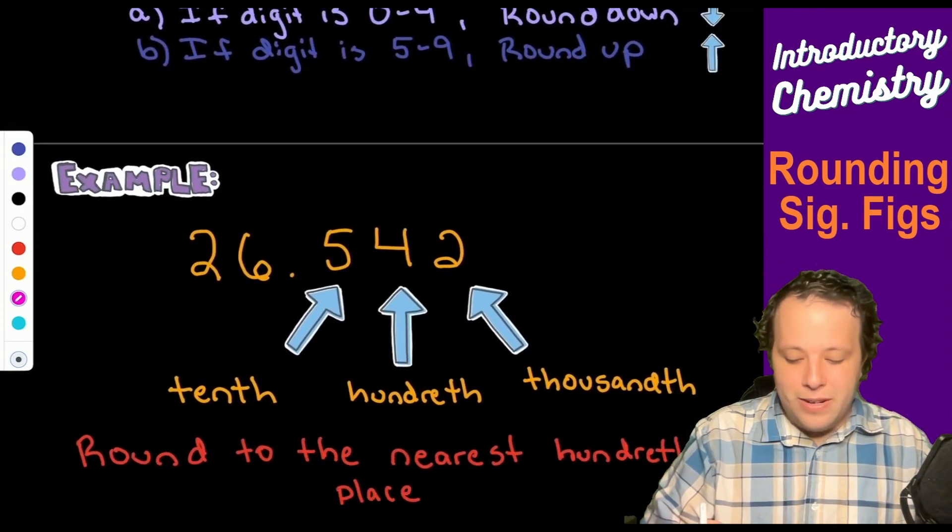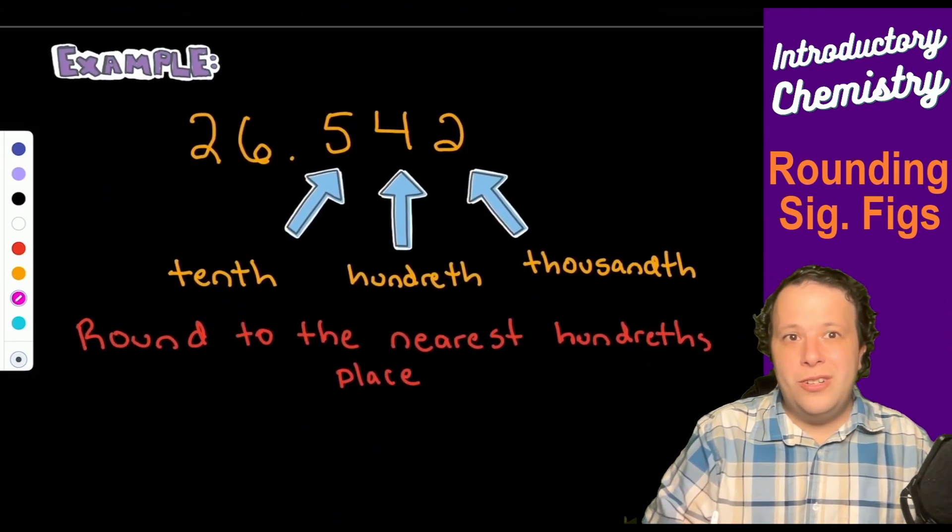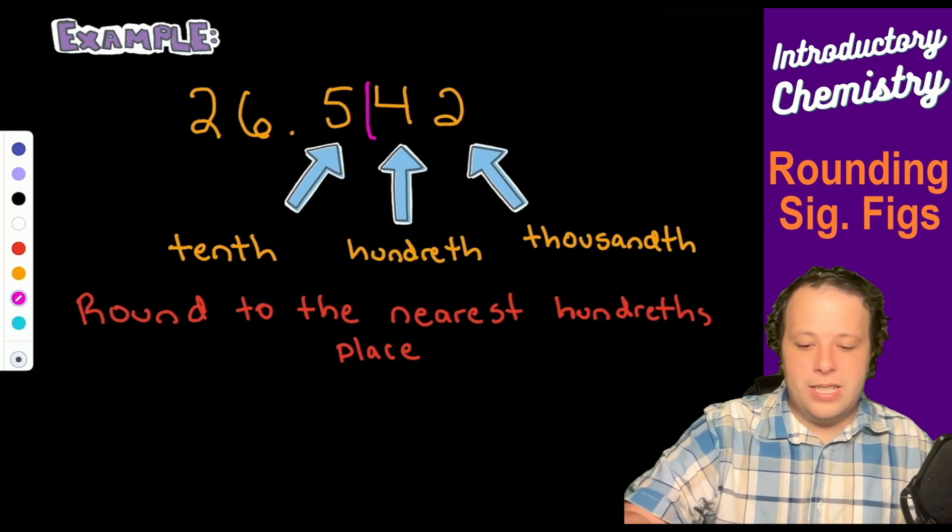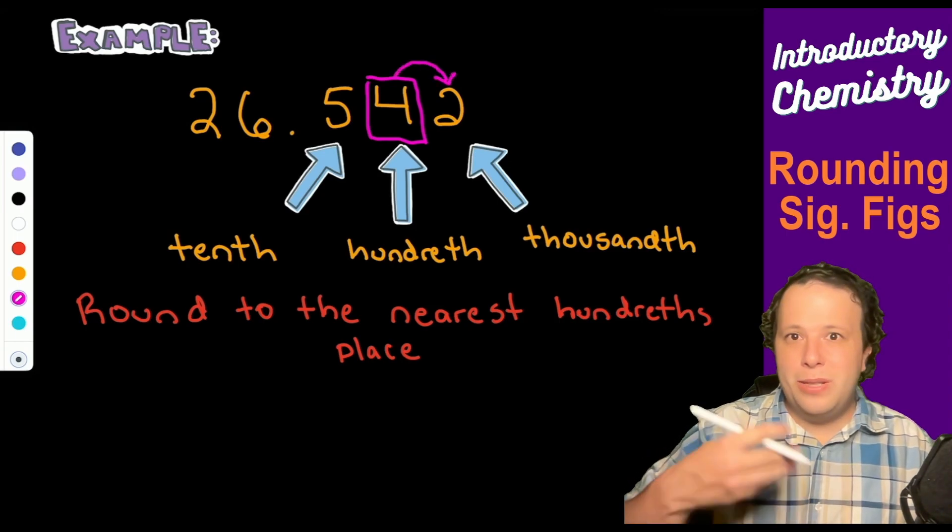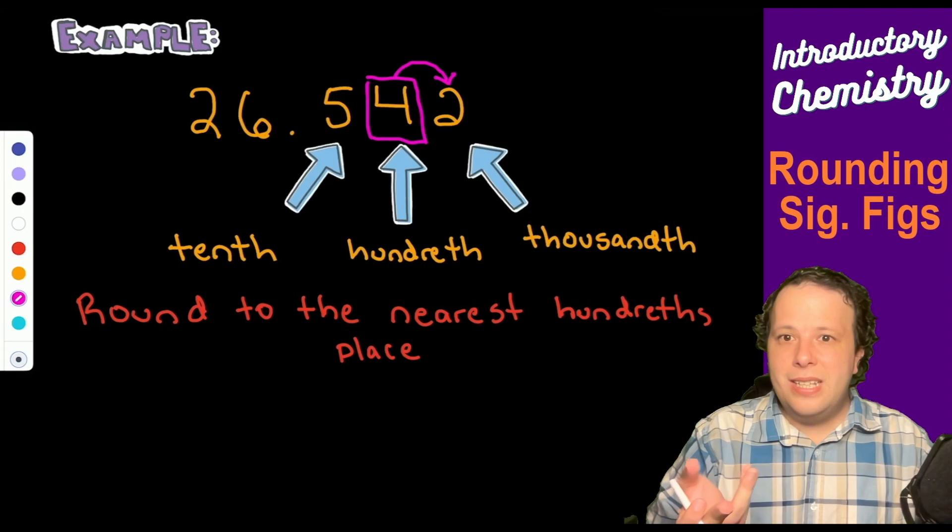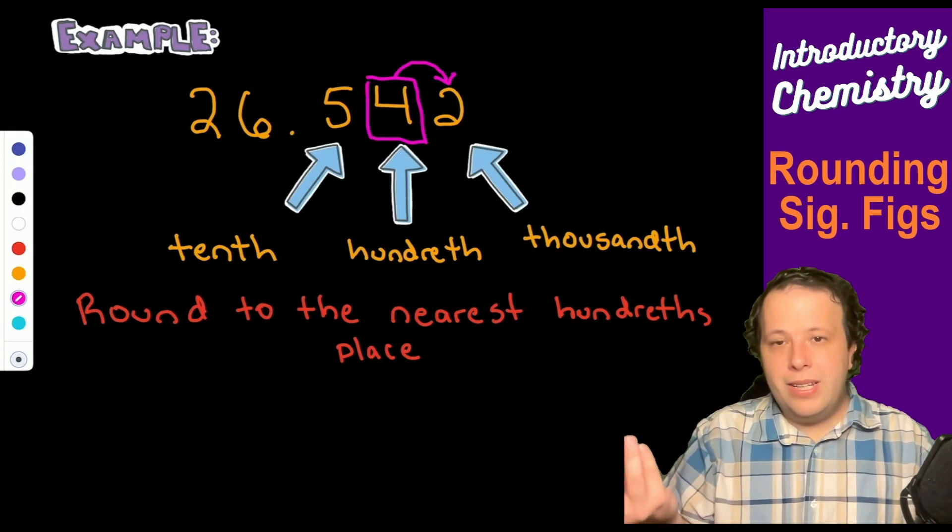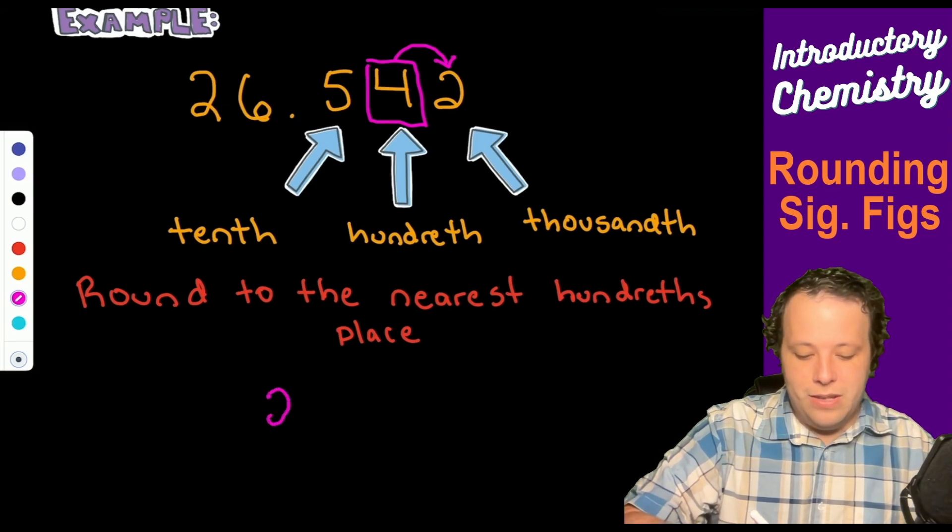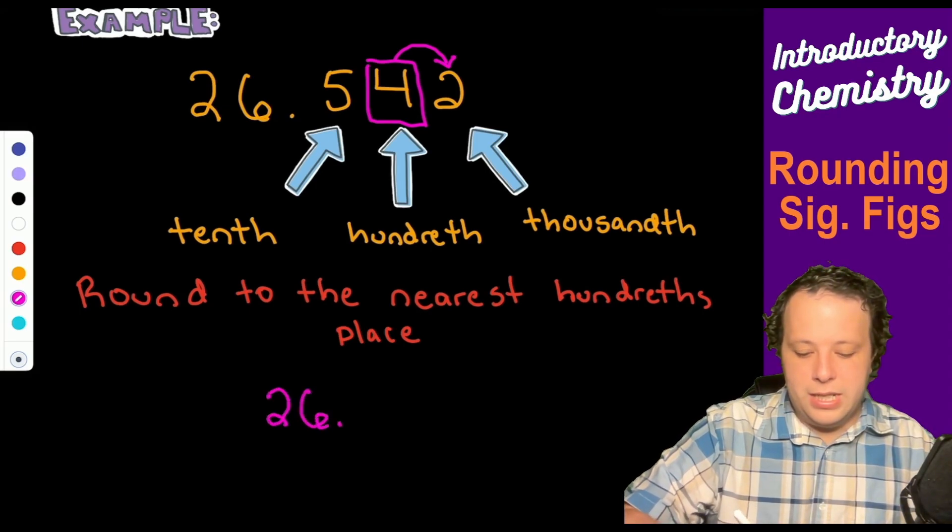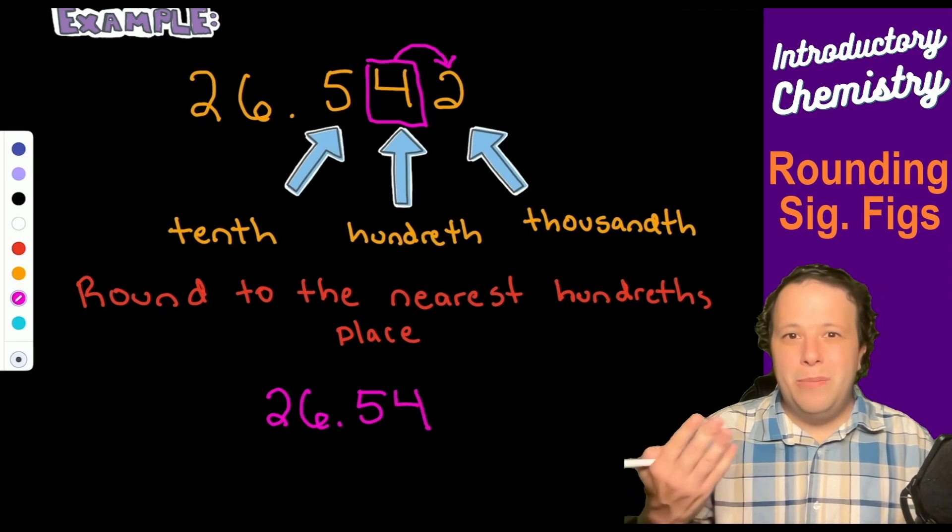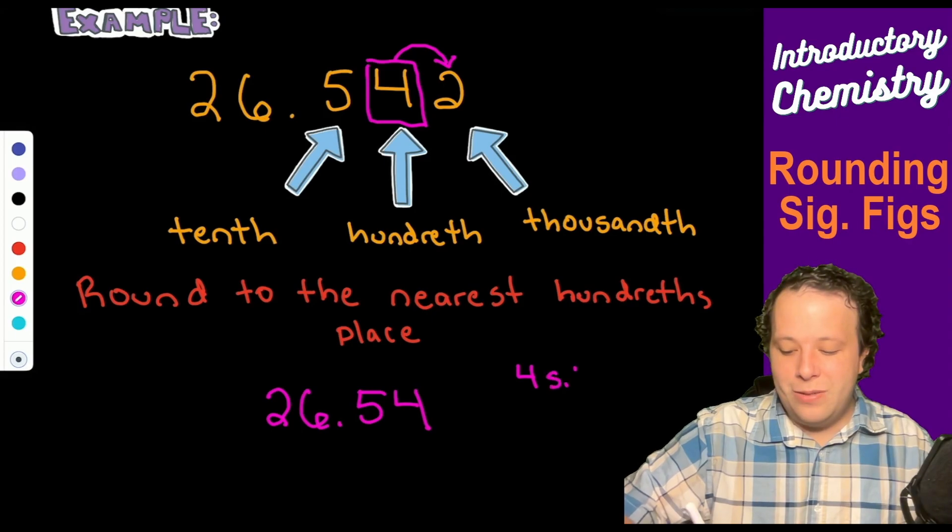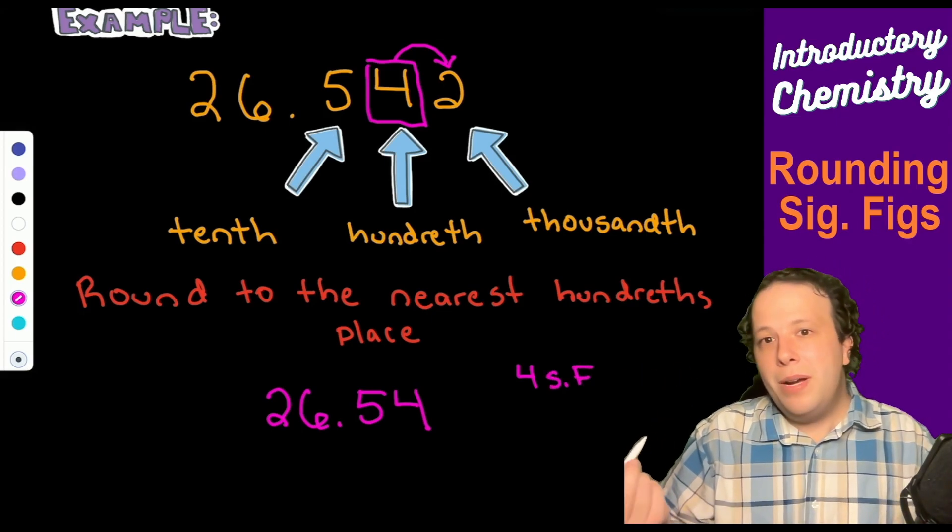If I take the same number and ask you to round to the nearest hundredth place, which is this second spot, same situation - we look one to the right, we see it's zero to four, so we round down again. It would be 26.54, and this tells you we rounded it to show four sig figs, which is a very common amount you need for a lot of chemical calculations.